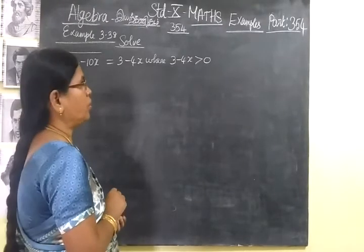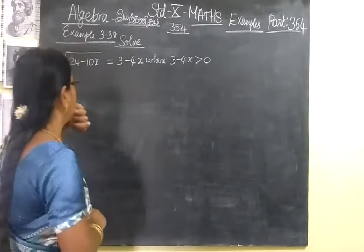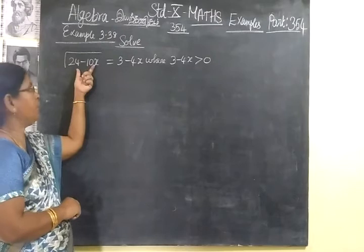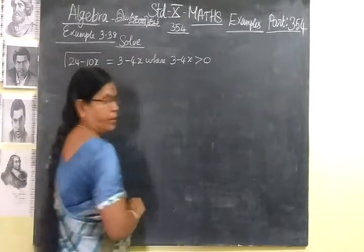Now we want to see example 3.38. Solve √(24-10x) = 3-4x, where 3-4x greater than 0.